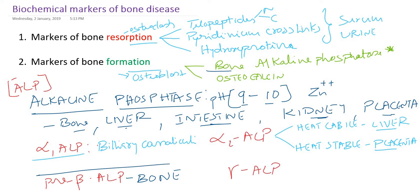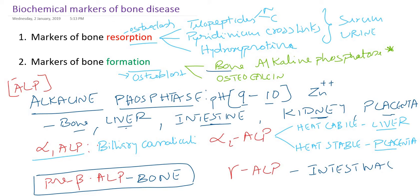So bone alkaline phosphatase is pre-beta. Alpha, beta, gamma classification is based on electrophoretic mobility - alpha migrates fastest. Gamma alkaline phosphatase is expressed from intestinal mucosal cells. Any disorder related to the intestine, like ulcerative colitis, will show elevated gamma alkaline phosphatase. So alkaline phosphatase is an isoenzyme: it is zinc-containing, catalyzes reactions at alkaline pH, and pre-beta alkaline phosphatase expressed in the bone is the biochemical marker of bone disease.